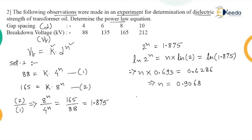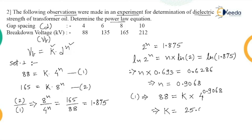Using n = 0.9068 and referring to equation 1, we can find K. By substituting into the equation using a calculator, the value of K = 25.03. As it is a constant, there is no unit. So in Set 1, using two values, we get n = 0.9068 and K = 25.03.